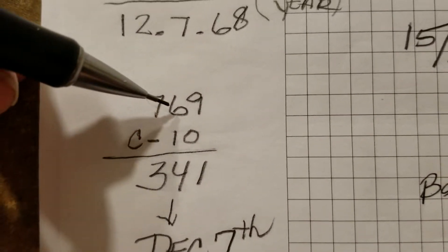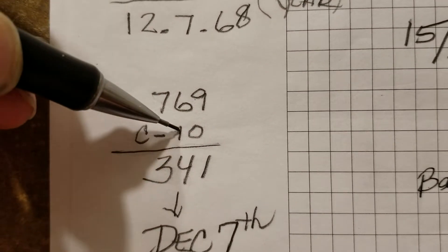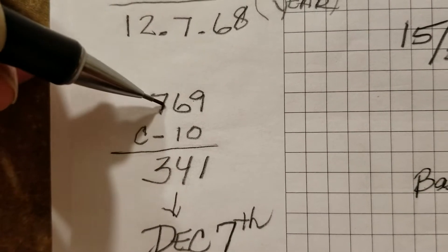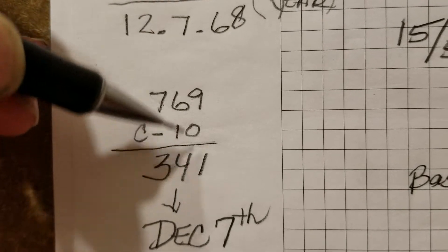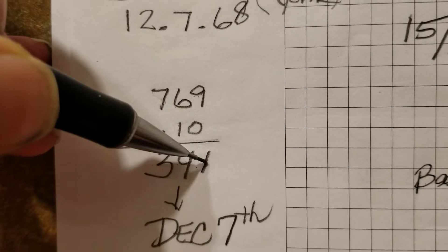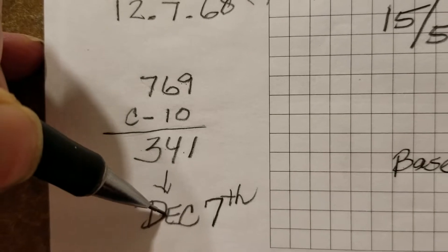That's why down here we took 769 and convert to 10. It means these two numbers add to a 10. So 7 and 3, 6 and 4, and 9 and 1. The 341st day of the year is December 7th.